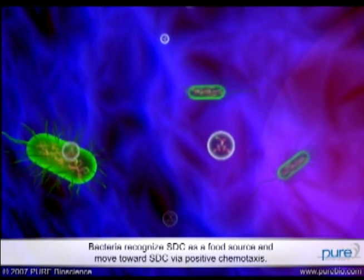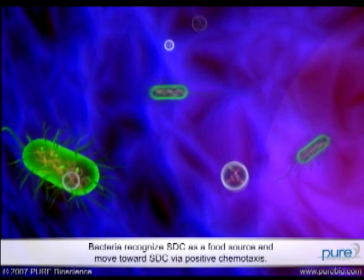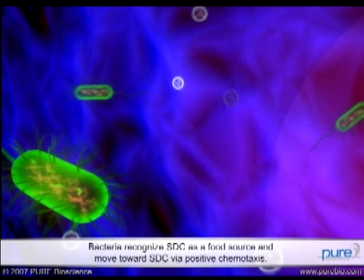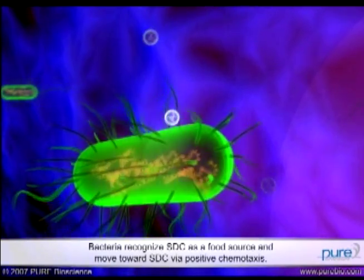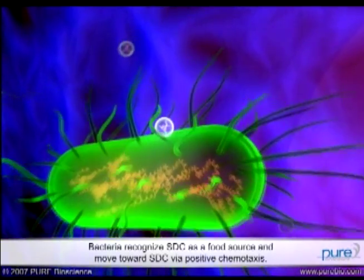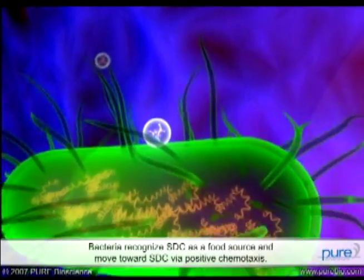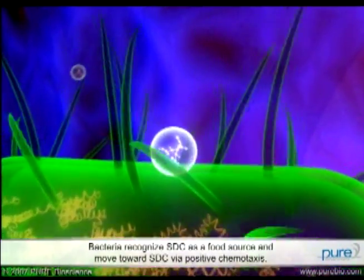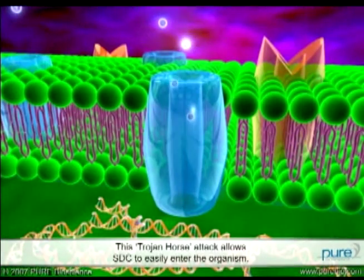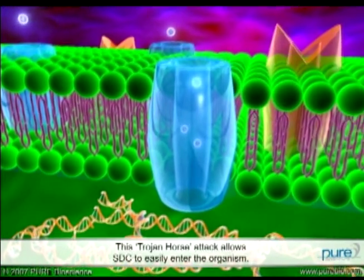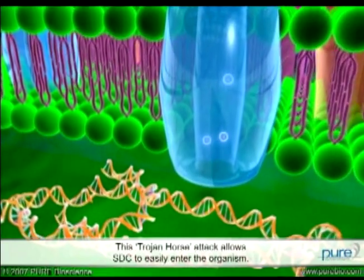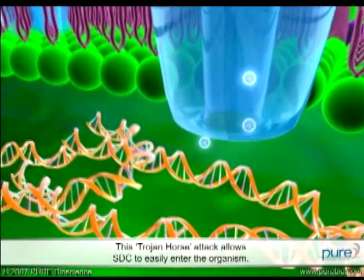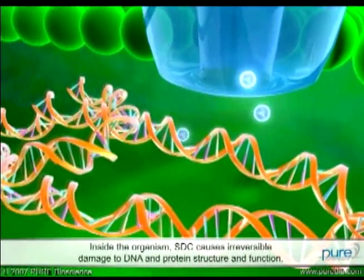Unlike traditional antimicrobials, bacteria are actually attracted to STC because they recognize citric acid as a food source. This trojan horse attack allows STC to easily enter the microorganism through membrane transport proteins.